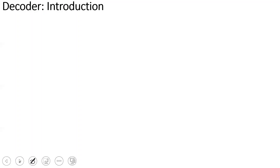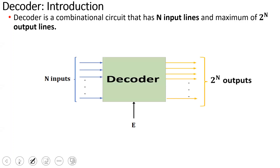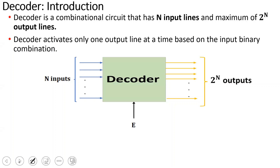A decoder is a combinational circuit that has n input lines and a maximum of 2 power n output lines. At any particular time, one output is active and every other output is 0.